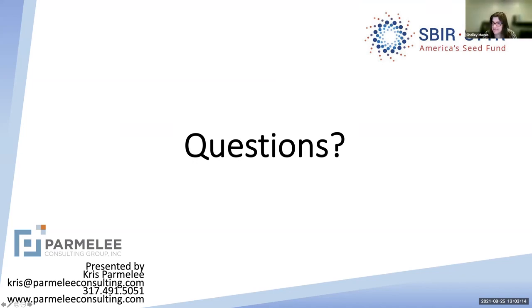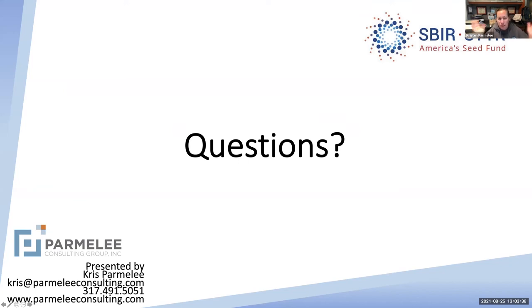Another question: can you apply basically the same SBIR application to NIH and NSF at the same time? You can, but their requirements, guidelines, and formatting couldn't be more different — everything is different. I've found it doesn't work well to take an NIH application and think you're going to turn it into an NSF — you're better off starting over. But you can submit them for the same project; you can only accept one in the odd event they were both funded. And you must disclose when you submit — you disclose to each that you've submitted to the other.